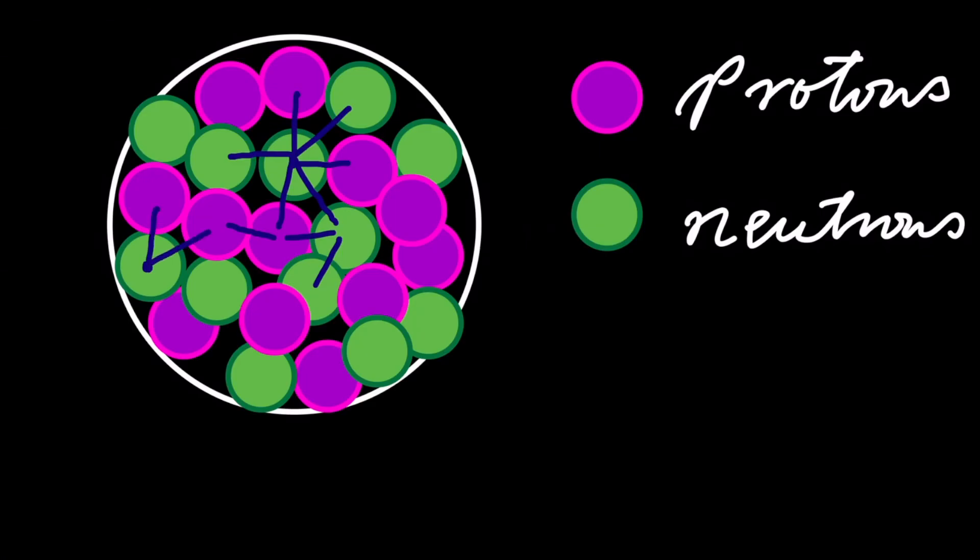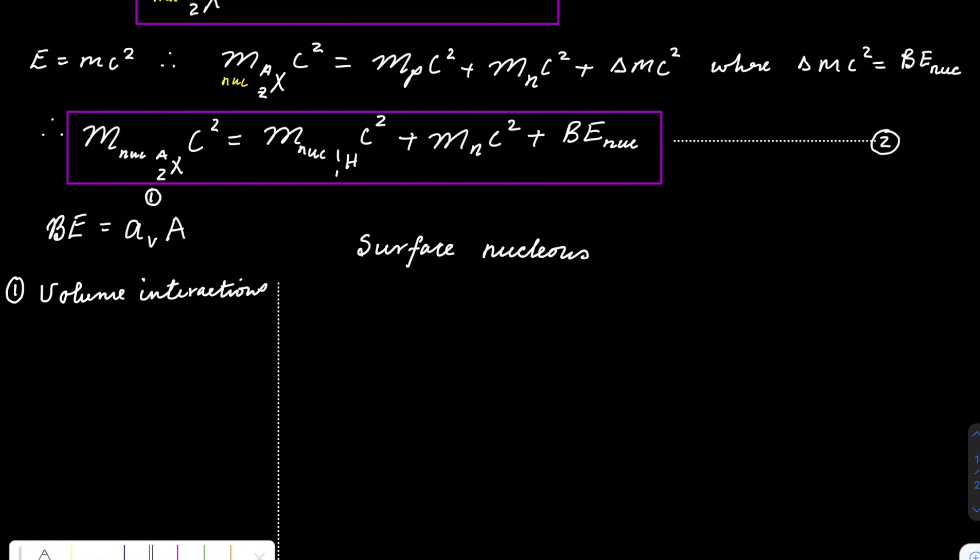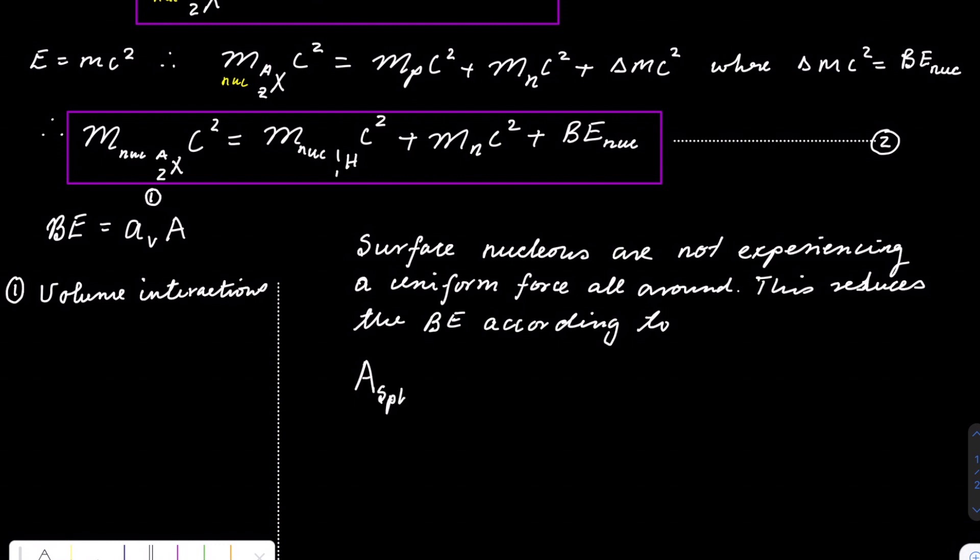Surface nucleons are not experiencing forces all around them as those that are in the center, and this will reduce the binding energy. We know that the area of the sphere is given by 4πr², where r can be replaced by the radius of the nucleus. Therefore, we can establish that the binding energy per nucleon will be directly proportional to the square of the cube root of the number of nucleons.